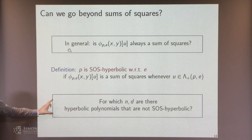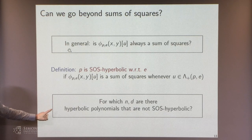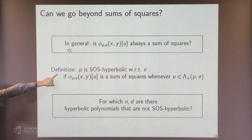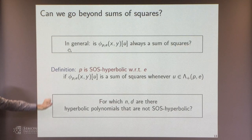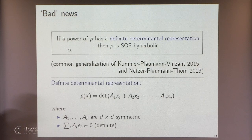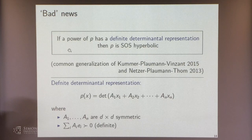One comment: I don't know if this SOS-hyperbolic property depends on E. The whole construction does depend on E, and I don't know the answer. Now let's start with some bad news—depending on your viewpoint, it may be good news. There are situations where all non-negative polynomials produced this way will be sums of squares. One sufficient condition: if a power of P has a definite determinantal representation, then P is SOS-hyperbolic. A definite determinantal representation means P equals the determinant of a symmetric matrix linear in x, where there exists a point E you can plug in to make this positive definite.